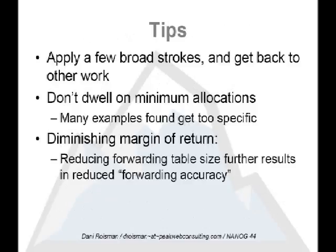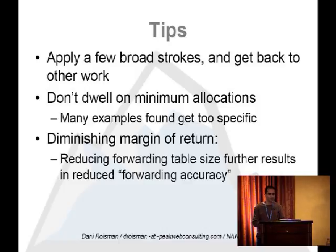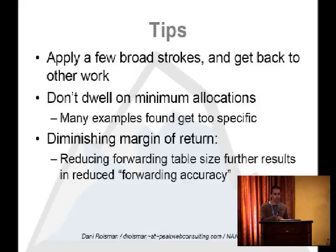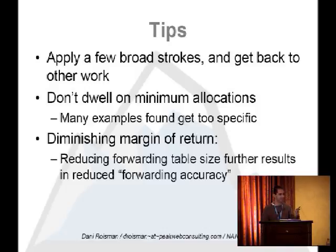A few tips. What we tried to do here is apply a few broad strokes and get back to other work — we bill by the hour, and the client didn't want to spend a hundred hours having us fine-tune the table. If I can do a few broad-stroke changes and fix the problem, I can go do something more interesting. They're going to have to buy new hardware eventually anyway. Don't dwell on minimal allocations — there were some Nanog threads with very smart people giving good advice building complex prefix filter sets based on minimal allocations, but it seemed like a lot of work and you'd throw away too much relevant routing, hitting diminishing returns. You could spend days tweaking the route table, reduce the forwarding table size, but also significantly reduce your accuracy. So: broad strokes — go make a VLAN change, an ACL change, or attend Nanog.